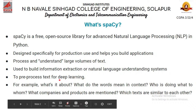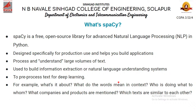spaCy understands what words mean in context. For example, the word 'Google' can be a noun because it's the name of a company, or a verb in normal language because 'to google' means to search. spaCy also understands who is doing what to whom — it understands the subject, object, nouns, proper nouns, and verbs. It also identifies what companies and products are mentioned in a text.